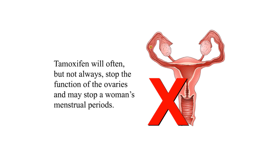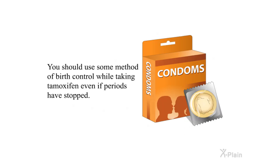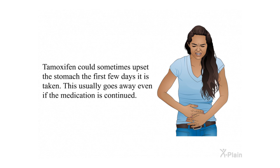Tamoxifen will often, but not always, stop the function of the ovaries and may stop a woman's menstrual periods. You should use some method of birth control while taking tamoxifen, even if periods have stopped. Tamoxifen could sometimes upset the stomach during the first few days it is taken; this usually goes away even if the medication is continued.